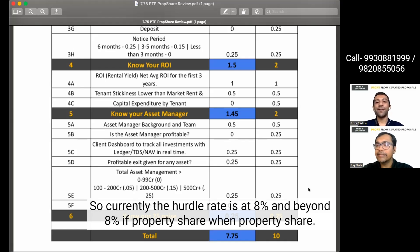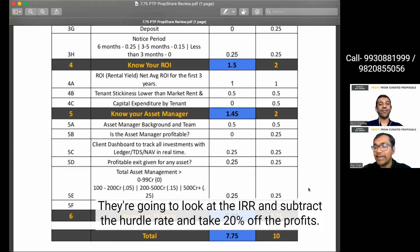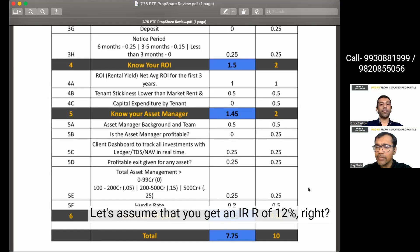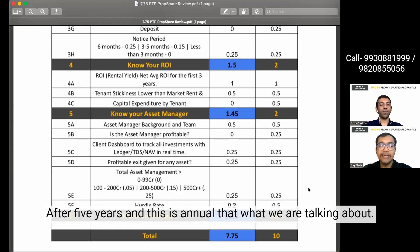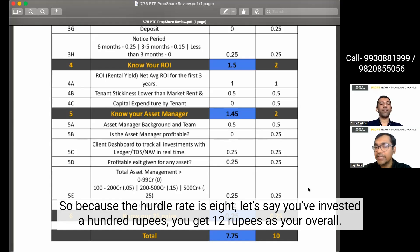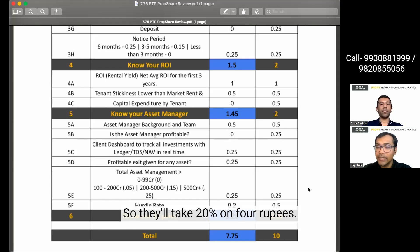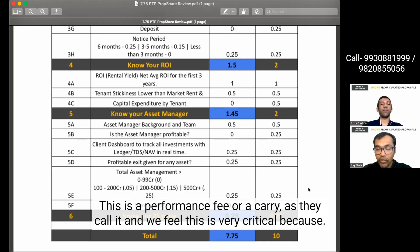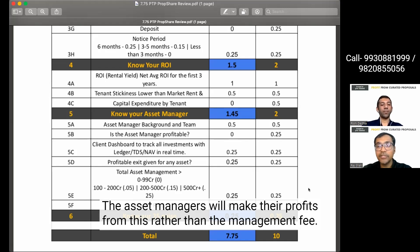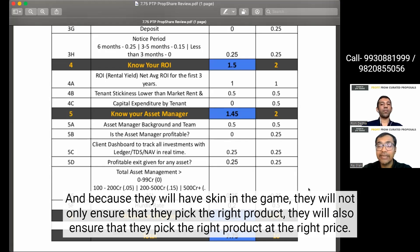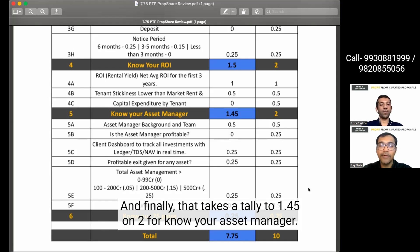What about hurdle rate? So, currently, the hurdle rate is at 8% and beyond 8% if PropShare, when PropShare gives you an exit, they are going to look at the IRR and subtract the hurdle rate and take 20% of the profits. Now, what does that mean? Let's take an example. Let's assume that you get an IRR of 12%, right? After 5 years and this is annual that what we are talking about. So, because the hurdle rate is 8, let's say you've invested 100 rupees, you get 12 rupees as your overall returns from the investment. So, they'll take 20% on 4 rupees. That's 80 paise. This is a performance fee or a carry as they call it and we feel this is very critical because the asset managers will make their profits from this rather than the management fee and because they will have skin in the game, they will not only ensure that they pick the right product, they will also ensure that they pick the right product at the right price. And finally, that takes a tally to 1.45 on 2 for know your asset manager.